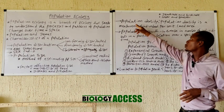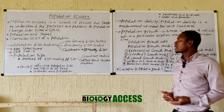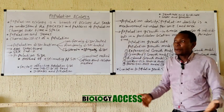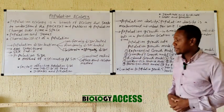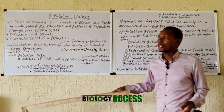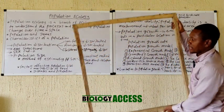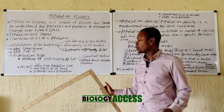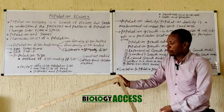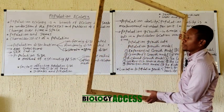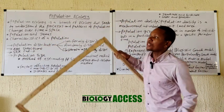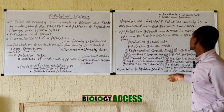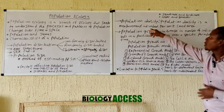The next characteristic is population density, which deals with the measurement of number of individuals per unit area of land. For example, using a quadrant of one meter square, we can determine population density. If we have five organisms per this area, the population density is five per meter square. Population density is the measurement of individuals per unit land area.